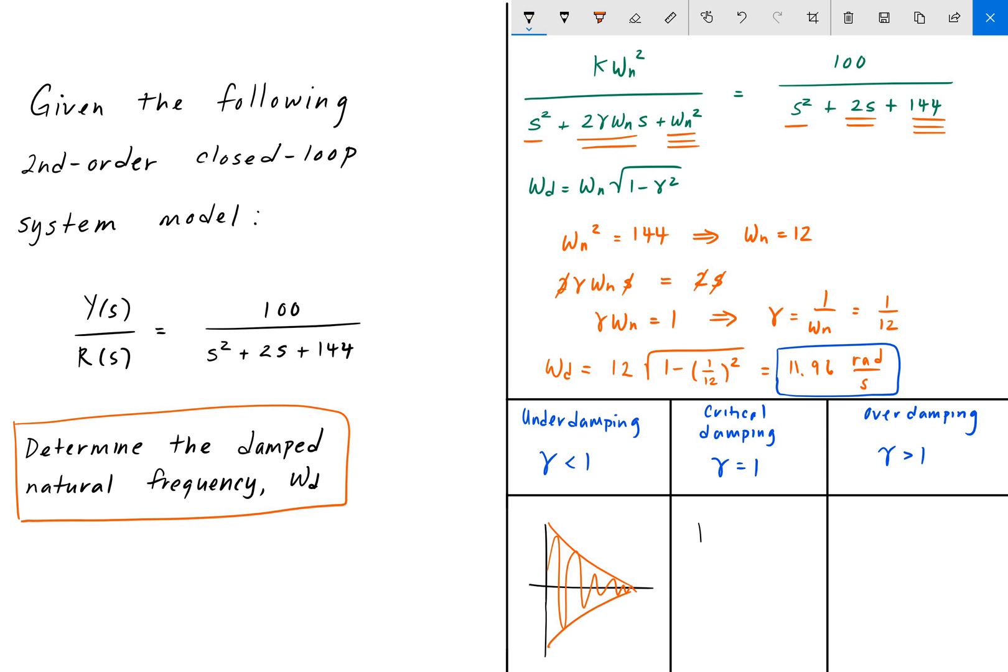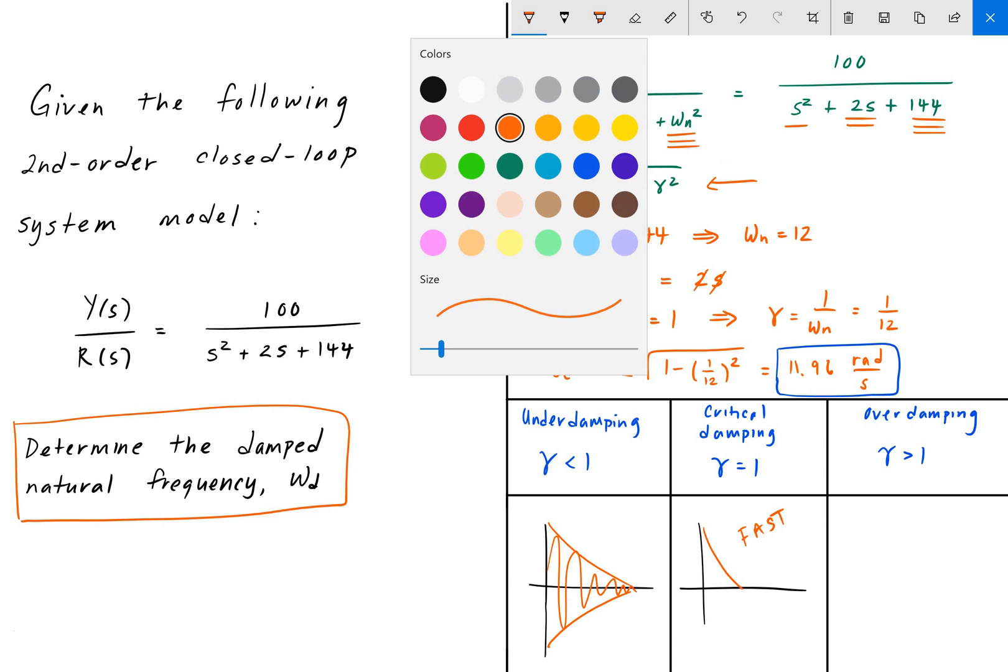For critical damping, there are no oscillations and the signal goes straight to zero. It's a very fast transition to zero. We can see in omega d here that when gamma is equal to 1, gamma squared is equal to 1, 1 minus 1 is 0, square root of 0 is 0, and therefore omega d will be 0.